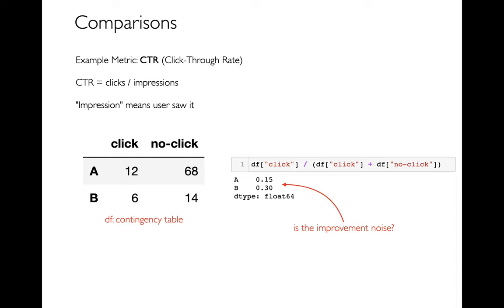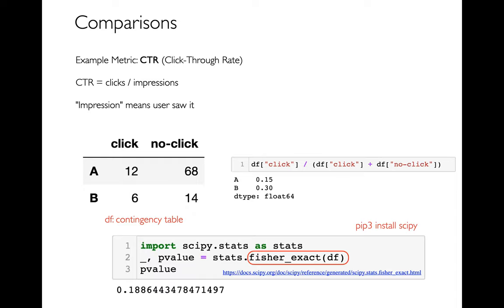We need a statistical test, and the easiest way is to use the stats module inside SciPy — install it with pip3 install scipy. You can take a data frame like this and feed it directly into stats.fisher_exact. This is the Fisher who's so famous from statistics. It returns a couple of values; the one we care about is the second — the p-value. Here the p-value is 0.188.